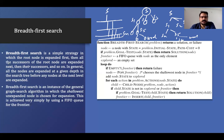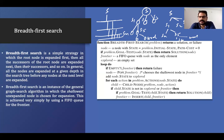Breadth First Search is a simple strategy in which the root node is expanded first, then all successors of the root node are expanded next, then their successors, and so on. All nodes at a given depth in the search tree are expanded before any node at the next depth level.